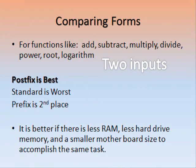Comparing forms. It is considered better if there is less RAM, less hard drive memory, and a smaller motherboard. For functions like add, subtract, multiply, divide, power, root, and logarithm — which only have two inputs — postfix form is the best because it uses the least amount of RAM. Standard form is the worst, because certain functions must be performed before others and parentheses must be used, requiring a lot of RAM and extra hard drive memory. Prefix form comes in second place, using a lot of RAM but less than the standard.